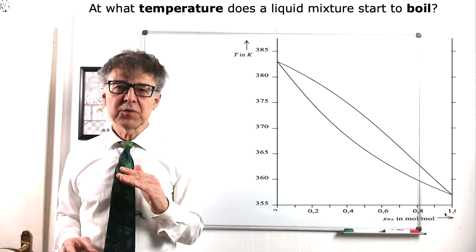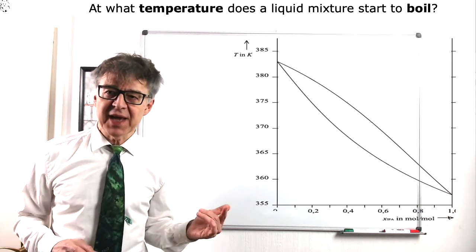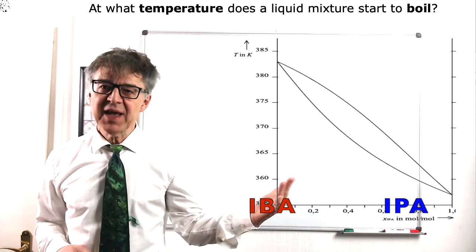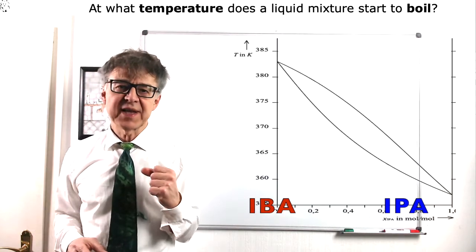The composition of the system is plotted on the x-coordinate and temperature on the ordinate. On the x-coordinate, you will find the pure IBA, the high boiler, on the left end and pure IPA, the low boiler, on the right end.